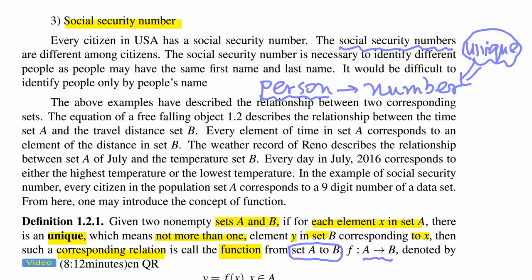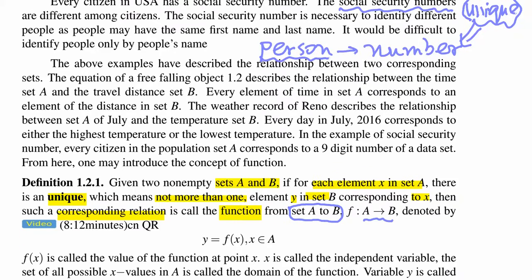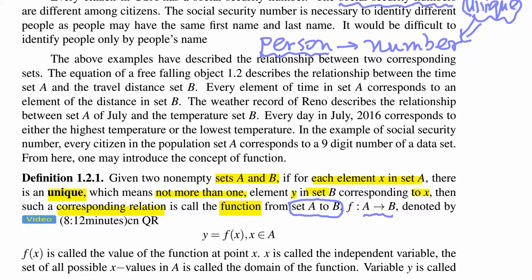And then it is denoted, it is denoted. Let me move this up so you can see. So it is denoted by this. Okay, Y equals f of X. X is in A. X is in A. So that's a starting set.